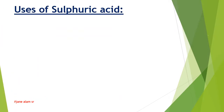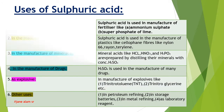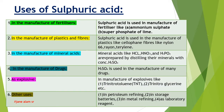Uses of Sulphuric Acid. Number 1: In the manufacture of fertilizers. Sulfuric acid is used in the manufacture of fertilizers like ammonium sulfate and superphosphate of lime.